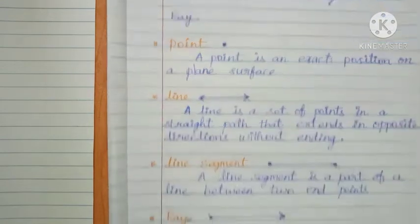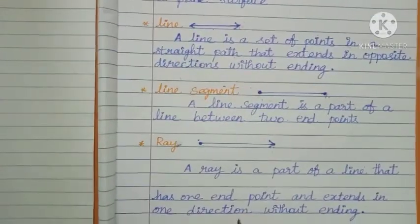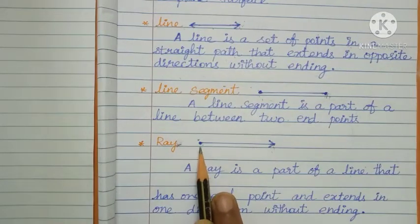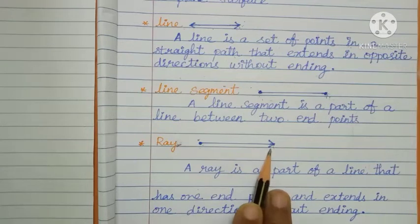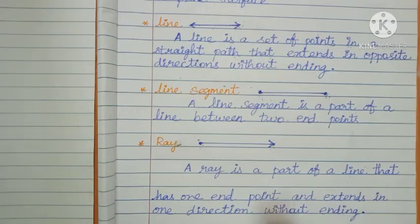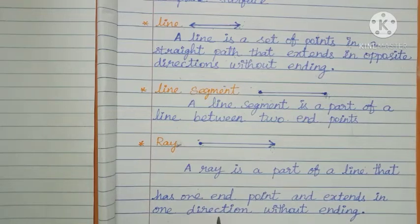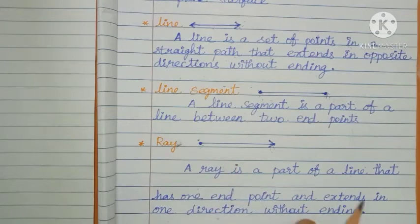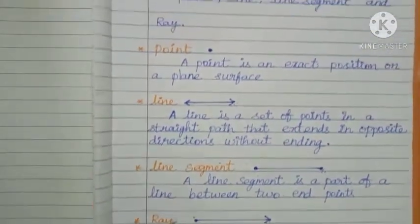Next: ray. A ray has a point, then a direction without ending. A ray is a part of a line that has one endpoint and extends in one direction without ending. This is called a ray. Complete all of this in your classwork, children.